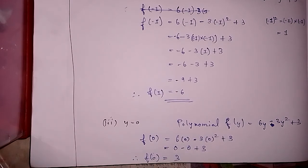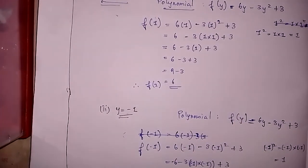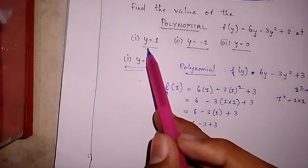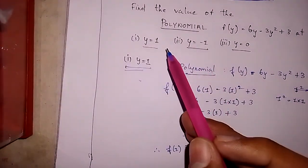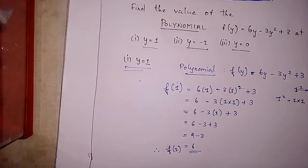So the answer of the polynomial f(y) equal to 6y minus 3y squared plus 3: for the given values y equal to 1, y equal to minus 1, and y equal to 0, we have applied all three values and found the results. Let me show you the full screen.